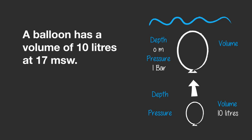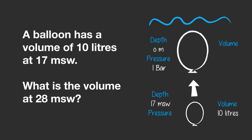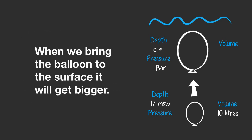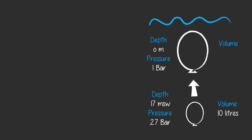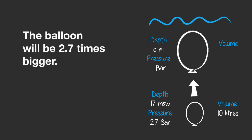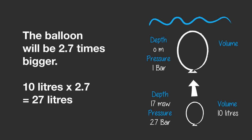A balloon has a volume of 10 liters at 17 meters of seawater. What is the volume at 28 meters of seawater? First, bring the balloon to the surface — when we bring it to the surface, it will get bigger. To know how much bigger, we need to know the pressure at 17 meters of seawater. It is 2.7 bar: 17 meters divided by 10, plus 1. The balloon will be 2.7 times bigger. 10 liters multiplied by 2.7 equals 27 liters.